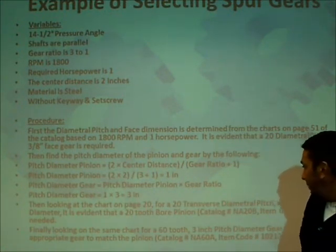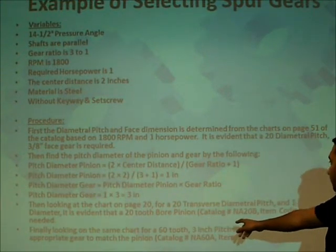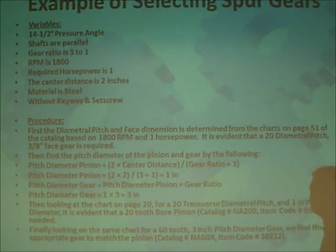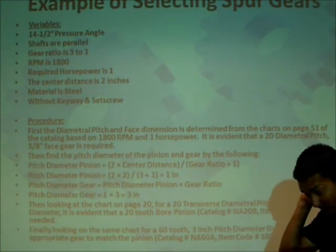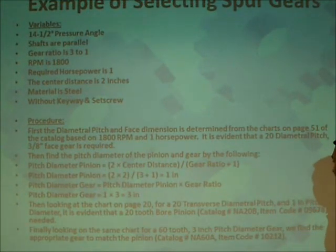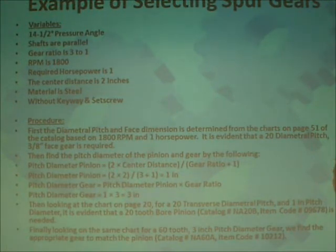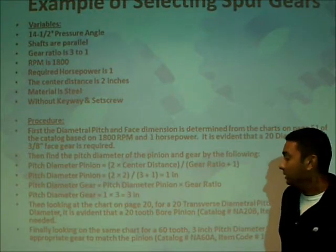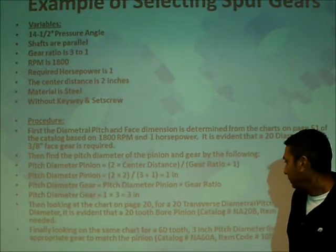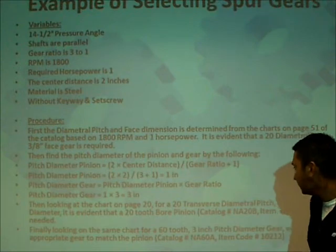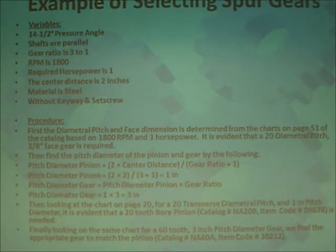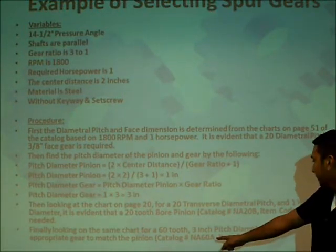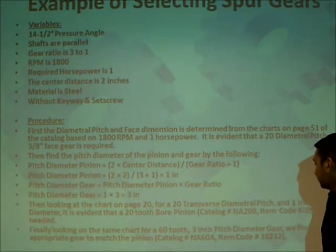Then you look at the chart on page 20. For a 20 transverse diametral pitch and 1-inch pitch diameter, it is evident that you would need a 20-tooth bore pinion, catalog number NA20B, item code 09678. On the same chart, to find the gear, you need a 60-tooth, 3-inch pitch diameter gear. The appropriate gear is catalog number NA60A, item code 10212.